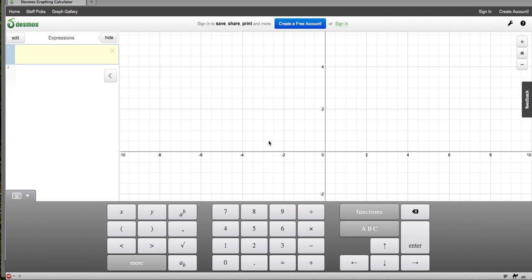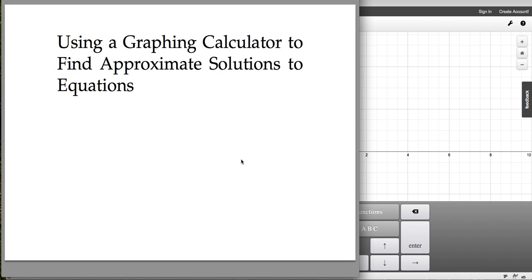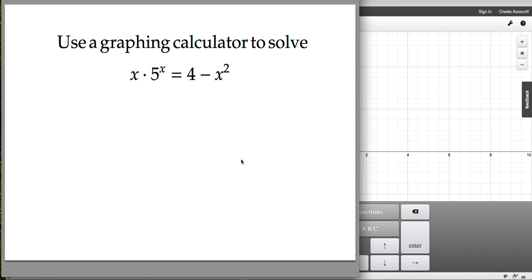We will be using the Desmos graphing calculator for this. So we've got a problem here. We want to use the graphing calculator to solve x times 5 to the x equals 4 minus x squared.